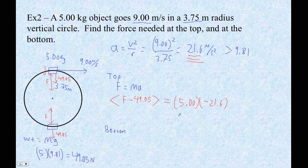And now we can solve this. Five times negative 21.6 plus 49.05 ends up being negative 58.95.